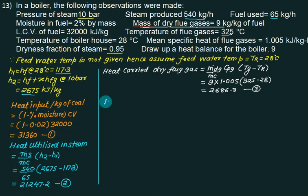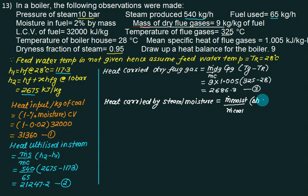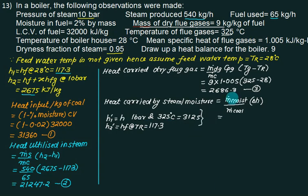Next, heat carried by moisture or by steam. This equals mass of moisture divided by mass of coal multiplied by delta H. Now how to calculate delta H? First you have to calculate H1 dash. What is the pressure and temperature of flue gas? Temperature is 325°C. See the steam table and find out H1 dash. Next is H2 dash, which is hf at room temperature, equal to 28°C, already known to us as 117.3. The mass of moisture per kg of coal is 2%, which is 0.02. This gives 3125 minus 117.3 for calculation number 4.